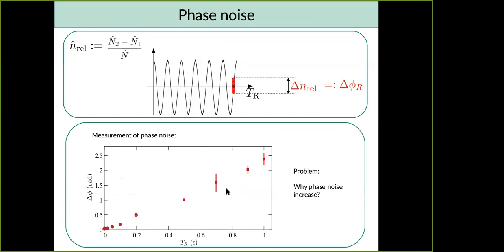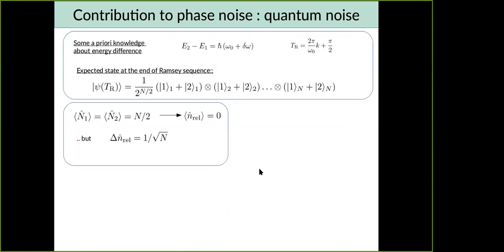So what you see at the bottom is their measurement of Δφ, this relative dispersion of the relative phase, versus interrogation time in seconds. So you see that the longer is this interrogation time, the higher is dispersion. So less precise are the measurements. So the question we ask is: what are the sources of this increase? What are the main contributions?